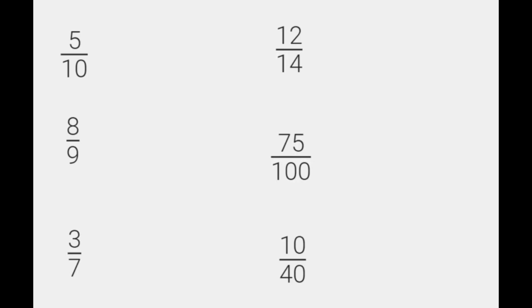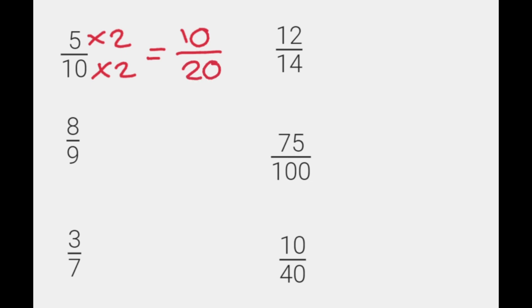We're going to work through a few examples now. So five over ten, or five tenths. We're going to multiply by two — you can multiply by anything, but I'm picking two for this example. Five times two gives us ten across the top, and ten times two gives us twenty.